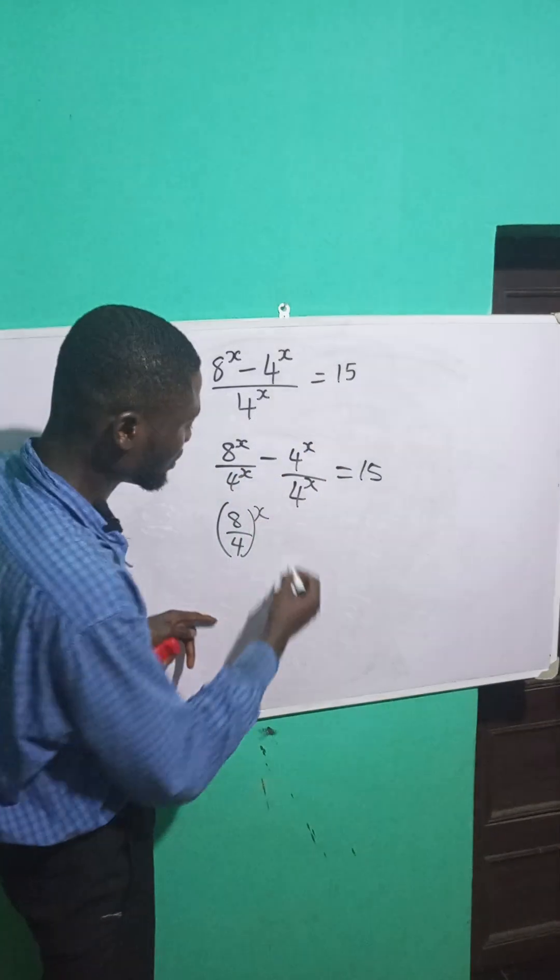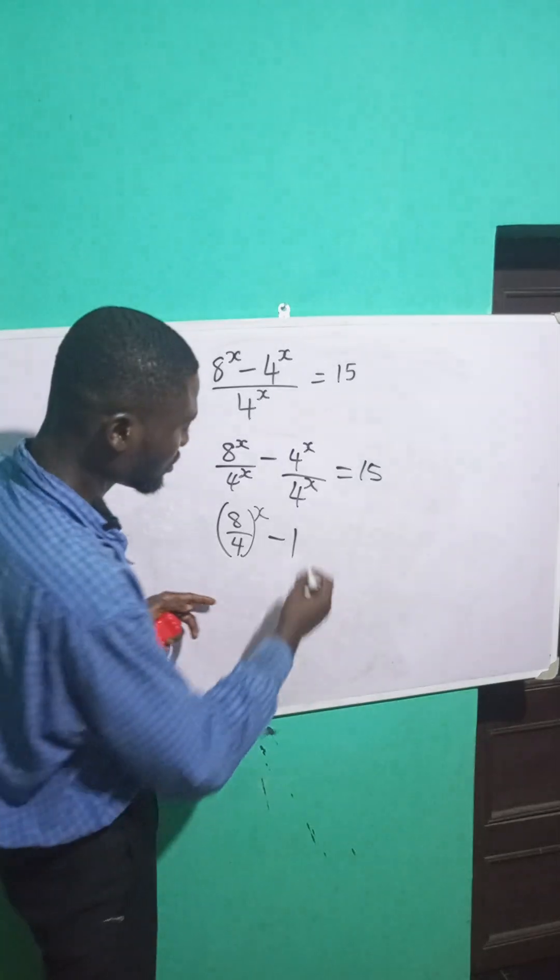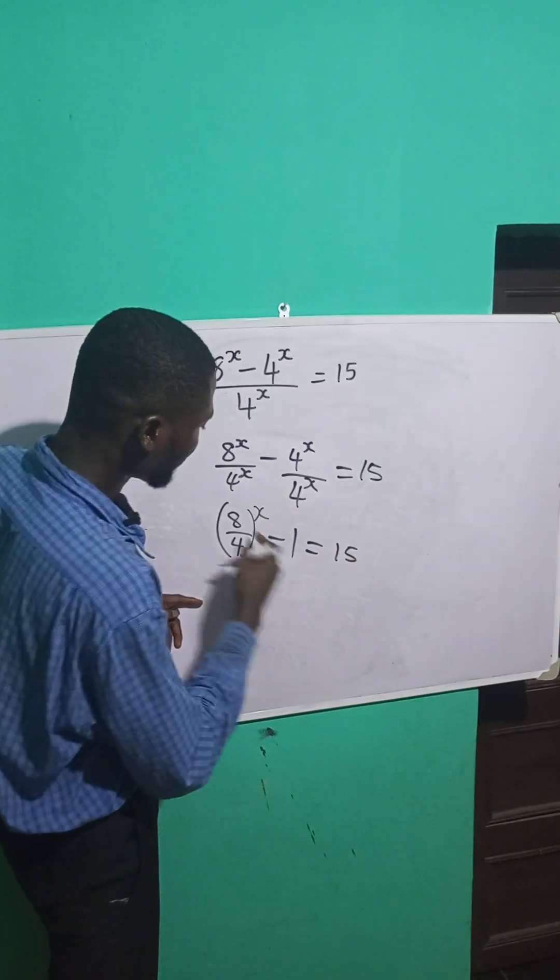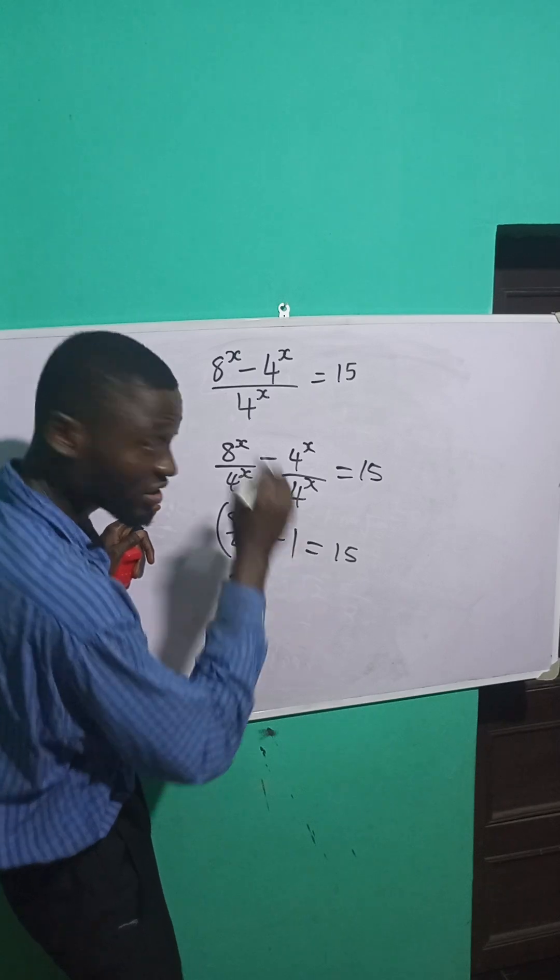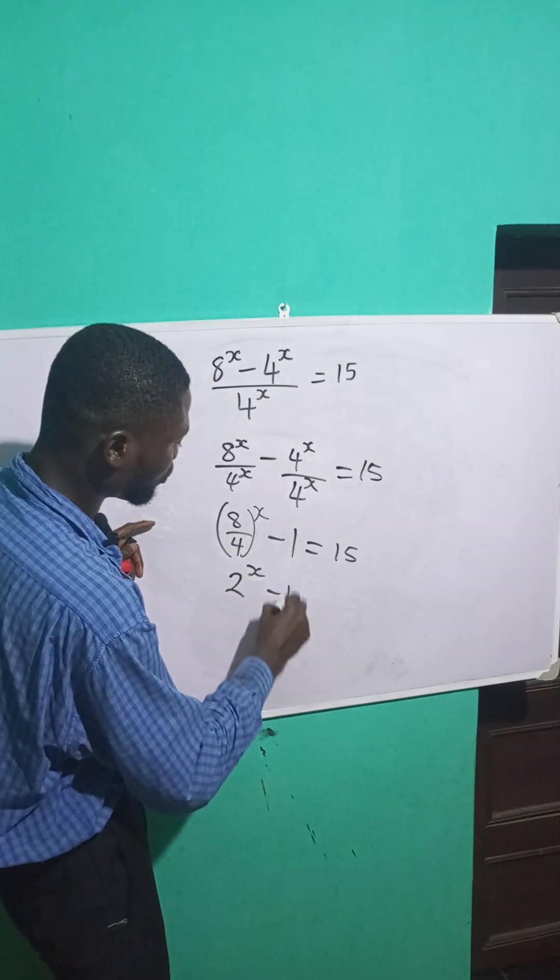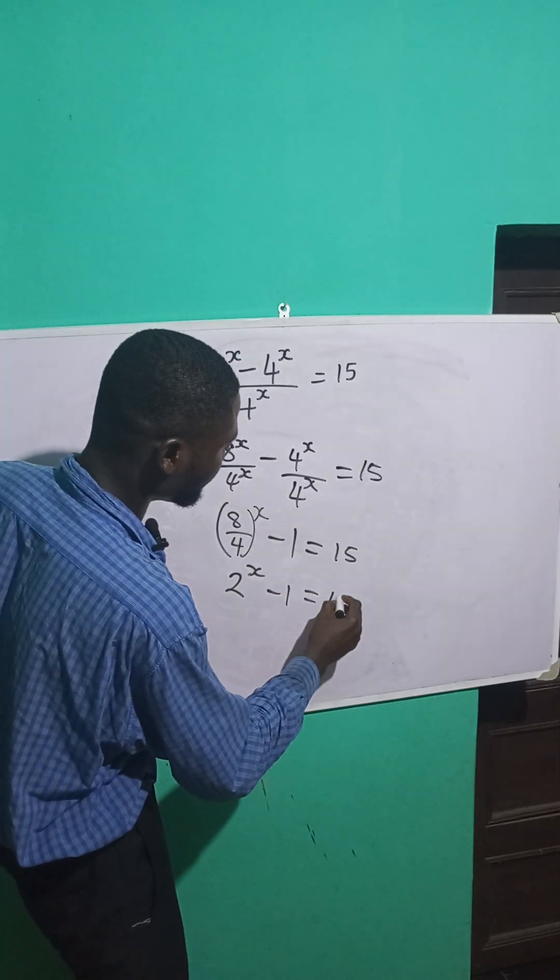Minus 4^x divided by 4^x is minus 1, right? It's equal to 15. 8 divided by 4 is 2, so I bring down the power, which is x. 2^x minus 1 equals 15.